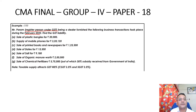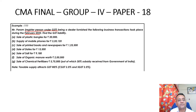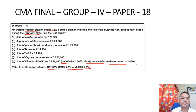Find the GST liability for: sale of plastic bangles for rupees 20,000; supply of mobile phone for rupees 3,20,120; sale of printed books and newspaper for rupees 1,25,500; sale of dates for 13,500; sale of salt for 9,180; sale of organic manure worth rupees 2 lakhs; and sale of chemical fertilizers rupees 5,75,000 out of which 30% subsidy received from Government of India.